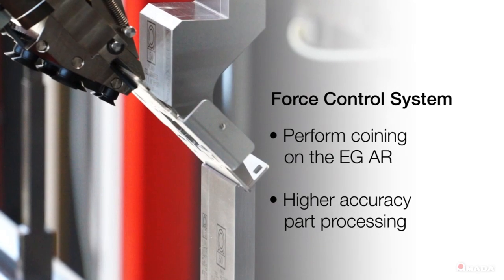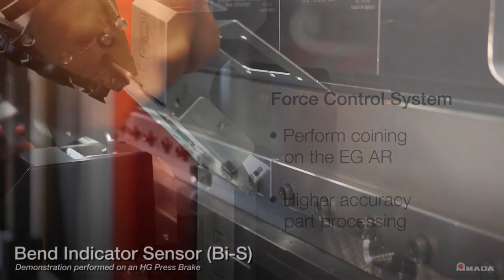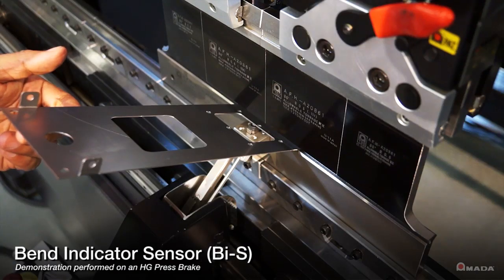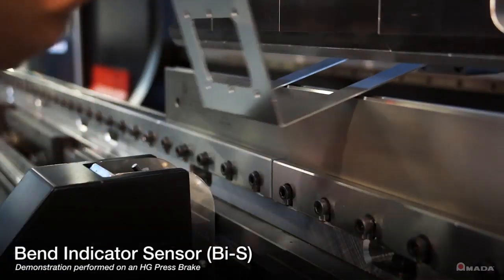The force control system gives users the ability to perform coining on the EGAR. An optional feature is the bend indicator sensor. It ensures consistent bend angles by compensating for any material spring back.